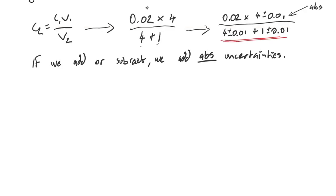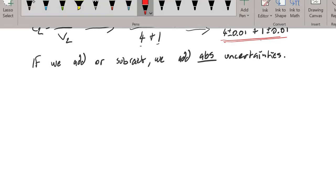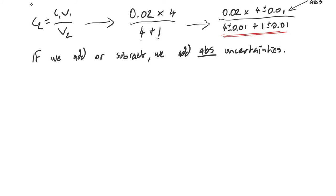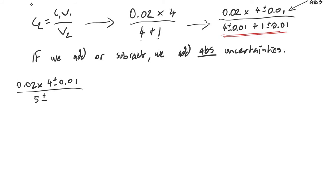This operation at the bottom — we're adding 4 and 1, so we need to add the absolute uncertainties here. Continuing our equation: 0.02 multiplied by 4 plus or minus 0.01, over 5 which is our second volume, plus or minus 0.02. So 4 plus 1 is 5, and 0.01 plus 0.01 is 0.02.